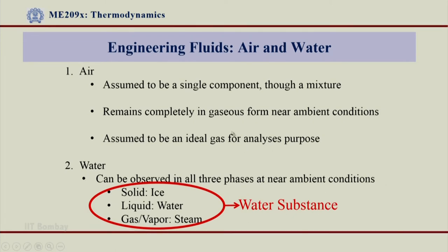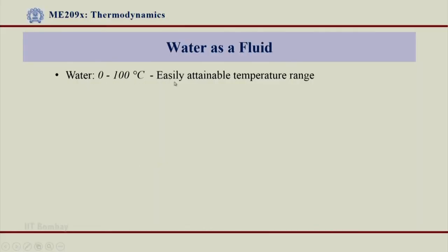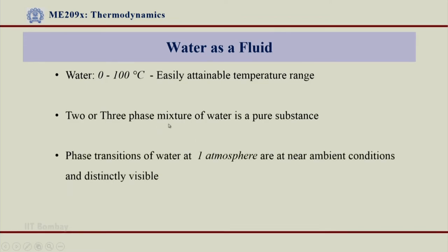As far as air is considered, I get only gaseous air near ambient conditions — the boiling point of air is much below room temperature. Out of these two engineering fluids, I will always prefer water because water exists as a pure substance even if we have a two-phase mixture of water, while air is not. I can study gases as fluids and liquids as fluids as far as water is considered. Water in the 0 to 100 degree centigrade easily attainable temperature range — a two or three phase mixture of water is a pure substance, and therefore these phases together also constitute a pure substance.